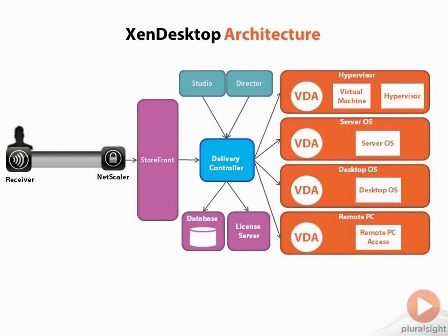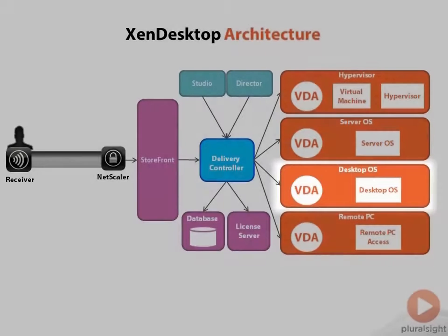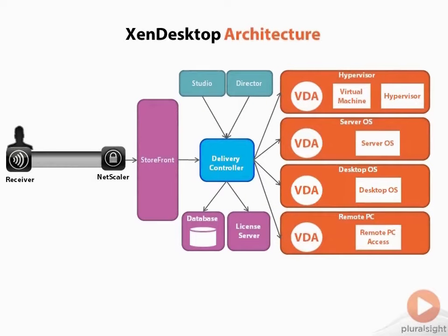Another use case is similar to SOS, or Server Operating System, but it is DOS — Desktop Operating System. Desktop Operating System is when you have an application that doesn't work on a server operating system, but you still want to install and manage it centrally. So you install it on a desktop operating system like Windows XP, Windows 7, or Windows 8, and then you publish the application from that desktop operating system.